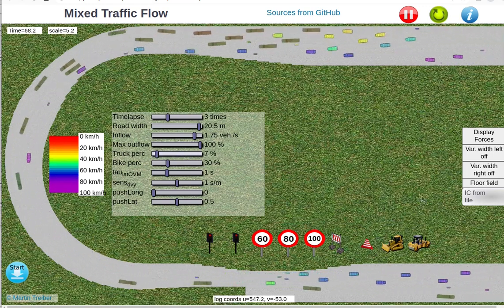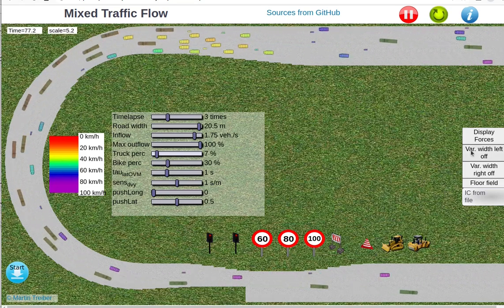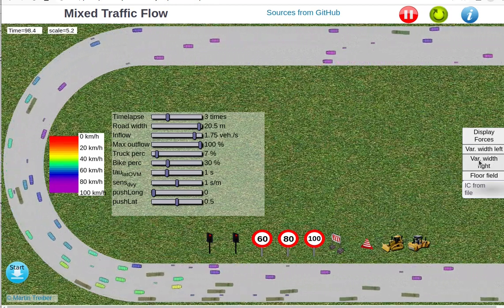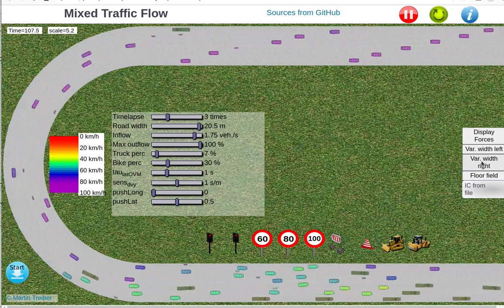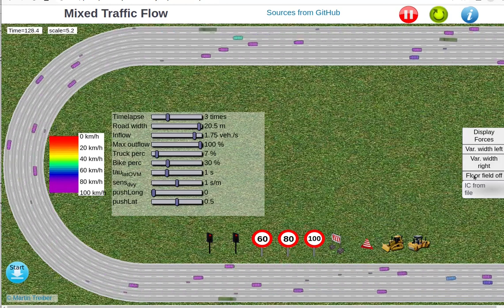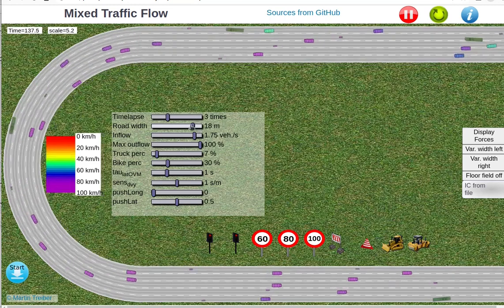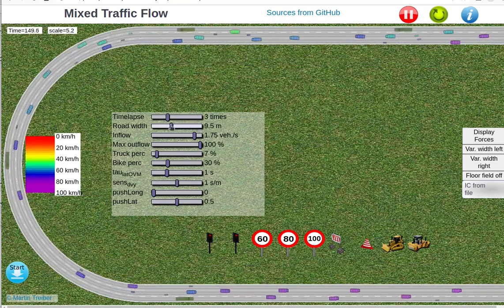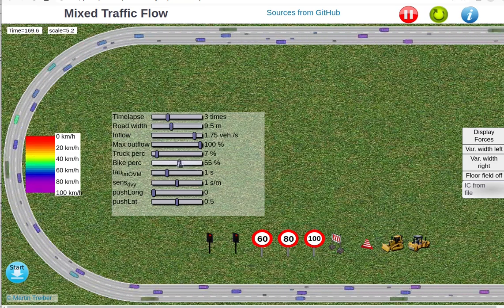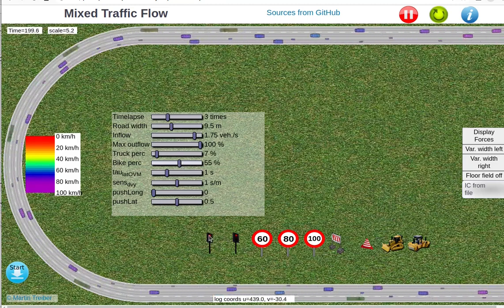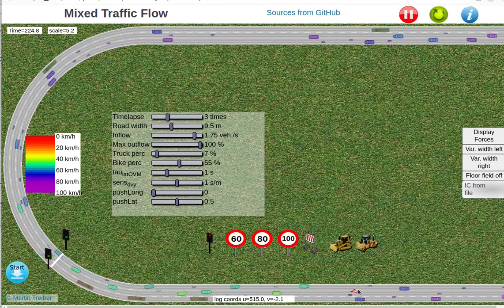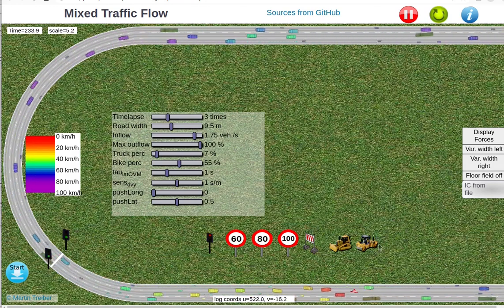We can also make the geometry more regular by removing this variable width. Now, in order to get to our three-lane bike and car and truck simulation, we will introduce the floor field and also reduce the width such that we have basically three lanes. Now, we can increase the bike percentage and we are basically done. We can also use traffic lights and we can also throw other objects to see how the interaction with different obstacles works.